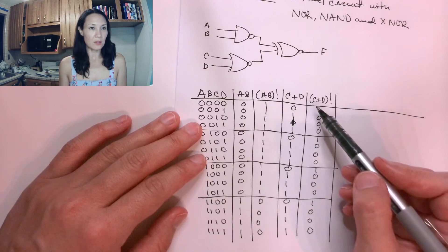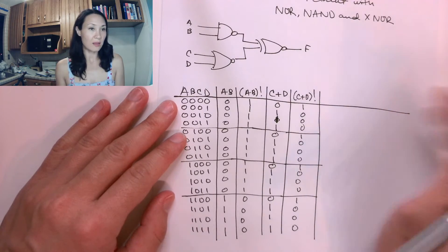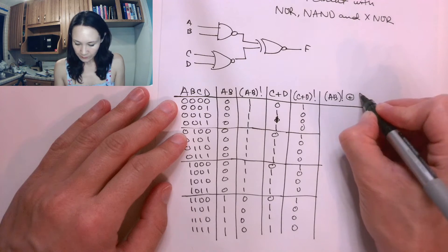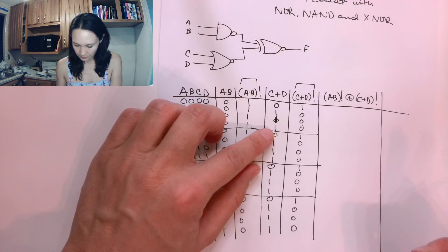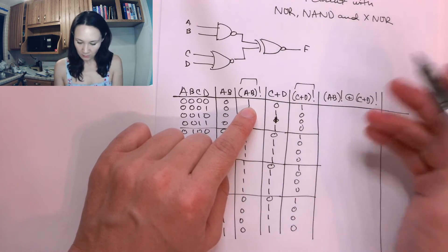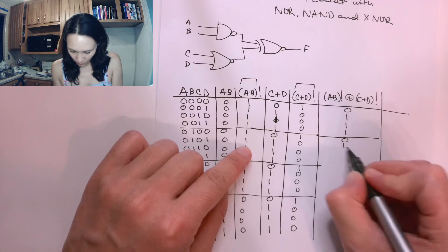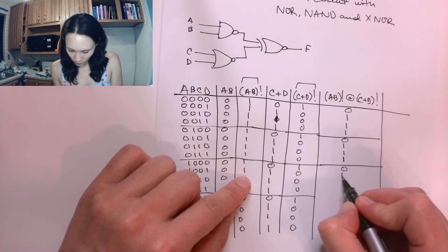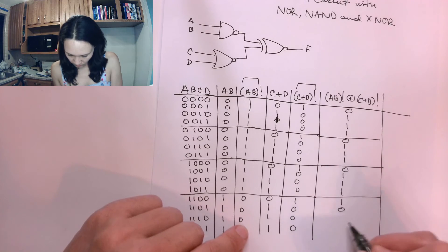Now these two columns are my inputs to the XNOR. I'll do XOR first, and then whatever that column is, I'll invert it to get my final answer. So I'm taking the A NAND B column XOR the C NOR D column. Remember, exclusive OR is only 1 if exactly one of them is 1 — not both and not neither. So this gives me: 0, 1, 1, 1, 0, 1, 1, 1, 0, 1, 1, 1, 1, 0, 0, 0.